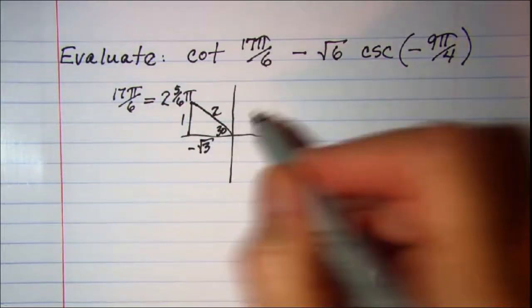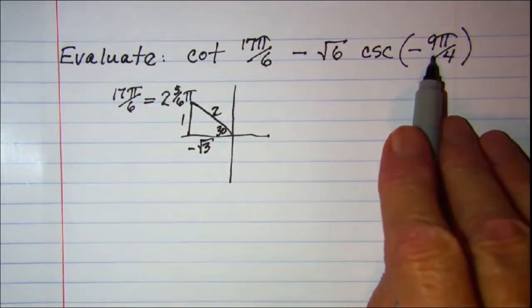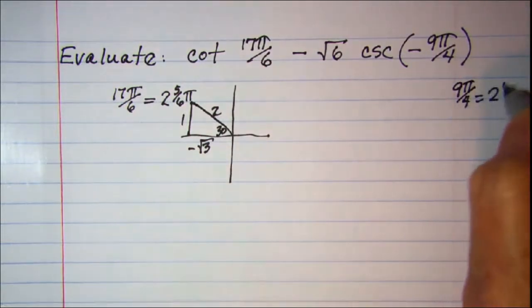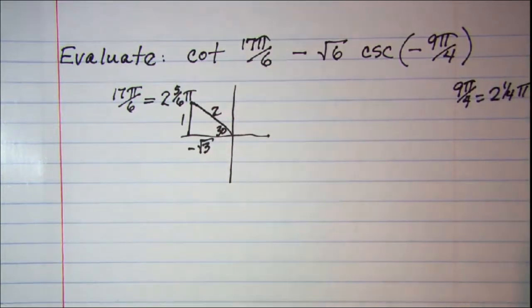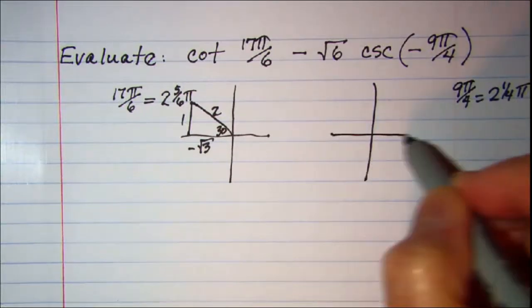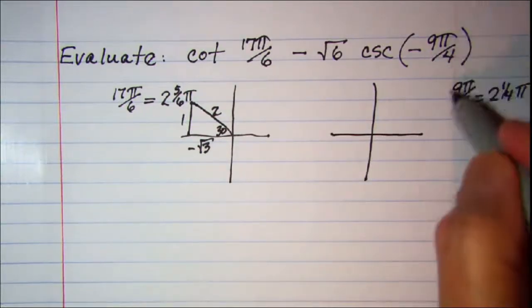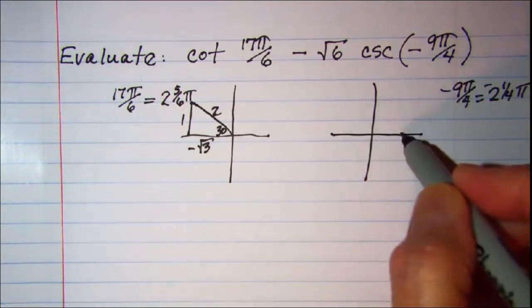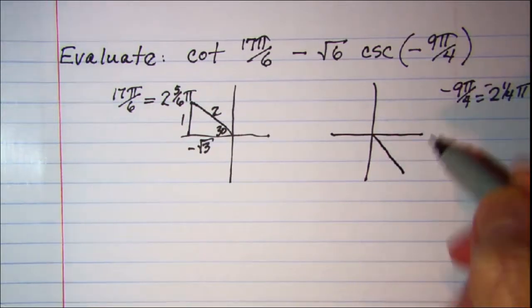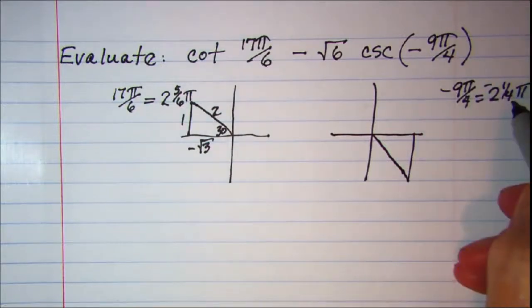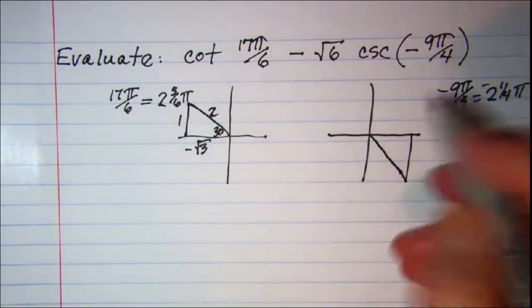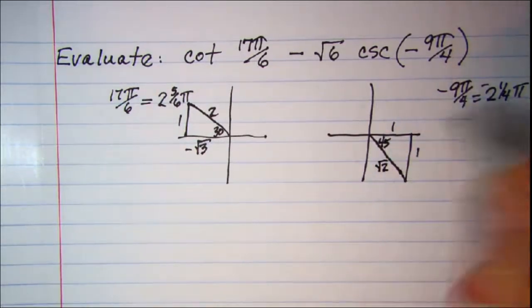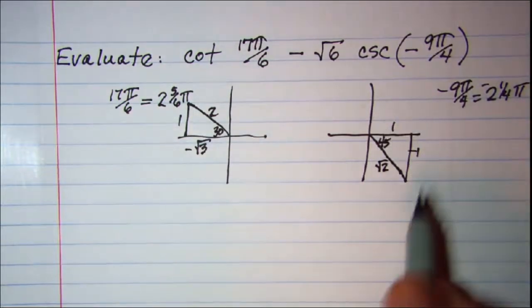Negative 9π over 4, 9π over 4 is 2 and 1/4. So a negative rotation, these are negatives. I have a negative 1 and then there's 2 and then 1/4 of a π would put me in quadrant 4. When the denominator is 4, I'm dealing with a 45 degree reference angle. So this is 1, 1, root 2, and the one below the axis is negative.